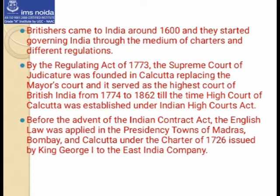The Mayor's Court had served as the highest court of the British from 1774 until 1862, when the High Court of Calcutta was established under the Indian High Courts Act. Before the advent of this Indian Contract Act, the English law was applied in the presidency towns of Madras, Bombay, and Calcutta under the Charter of 1726, which was issued by King George I to the East India Company.